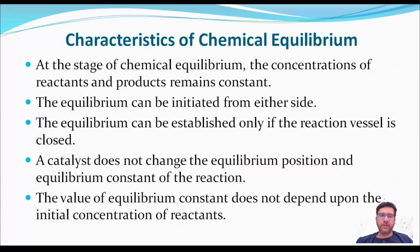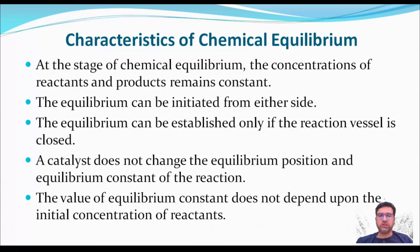Characteristics of chemical equilibrium: The concentration of reactants and products remains constant. Equilibrium can be attained from either side. It can be established only if the reaction vessel is closed. A catalyst does not change the equilibrium position or the equilibrium constant of the reaction. The value of the equilibrium constant does not depend upon the initial concentration of the reactants.